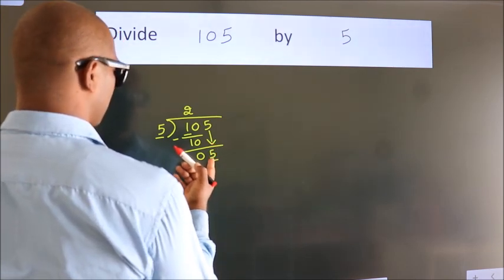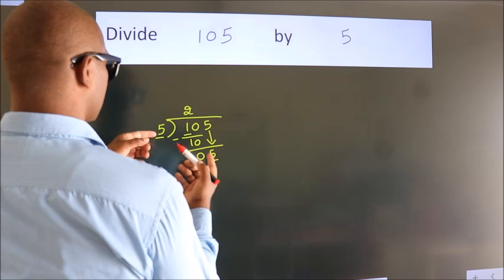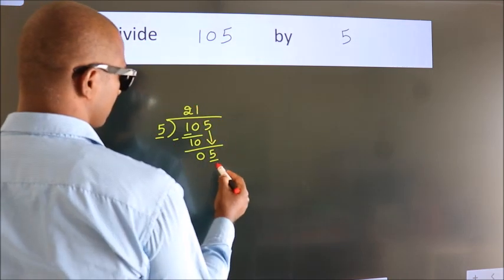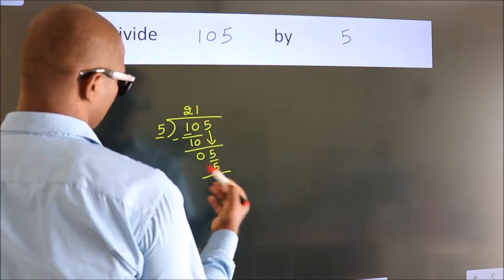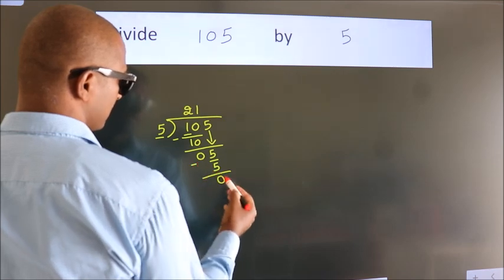A number close to 5 in the 5 table is 5 once, 5. Now we subtract. We get 0.